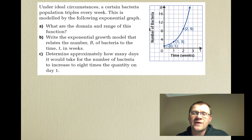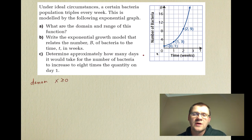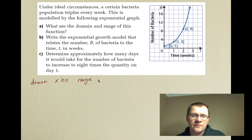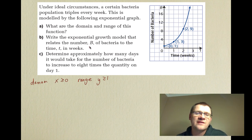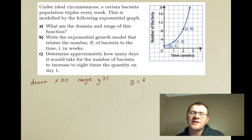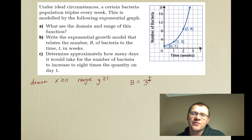The domain of this function is x ≥ 0, since we started at zero. The range is y ≥ 1, since the bacteria count starts at 1. To write the exponential growth model relating the number of bacteria B to time in weeks t: since it triples every week, B = 3^t. After week 1 it's 3^1, after week 2 it's 3^2, and so on.